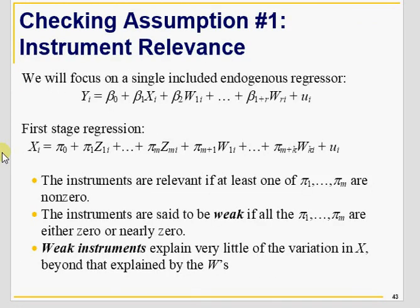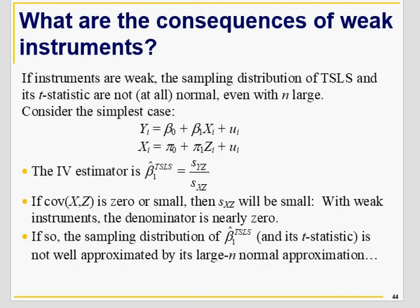The first assumption is that you must have these pi coefficients — at least one of them should not be equal to zero for an instrument to be valid, where X is your endogenous regressor. If these pi coefficients are equal to zero, it means the instrument is weak. Let's discuss the implications of a weak instrument.